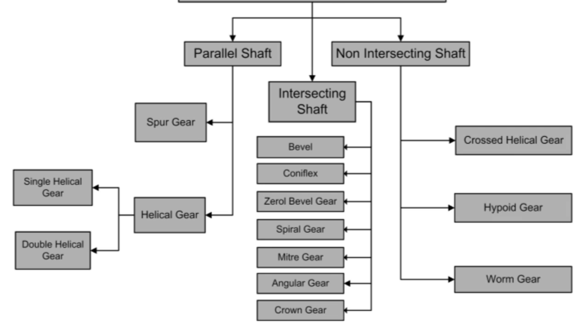Non-intersecting and non-parallel shaft gears are classified into three groups: crossed helical gear, hypoid gear, and worm gear.